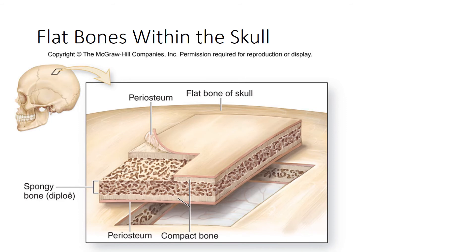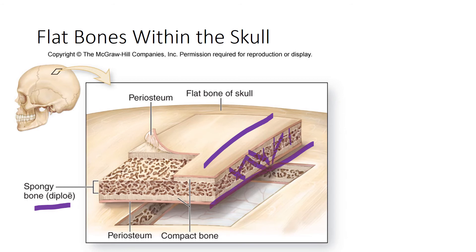A unique feature of our flat bones within the skull is the diploe — two layers of compact bone with a spongy bone sandwiched in between. This arrangement of compact bone, compact bone, and porous spongy bone in the middle is found only within the bones of the skull.